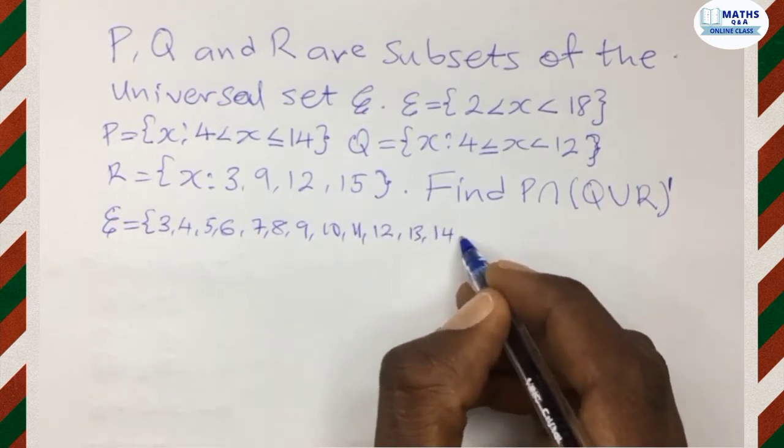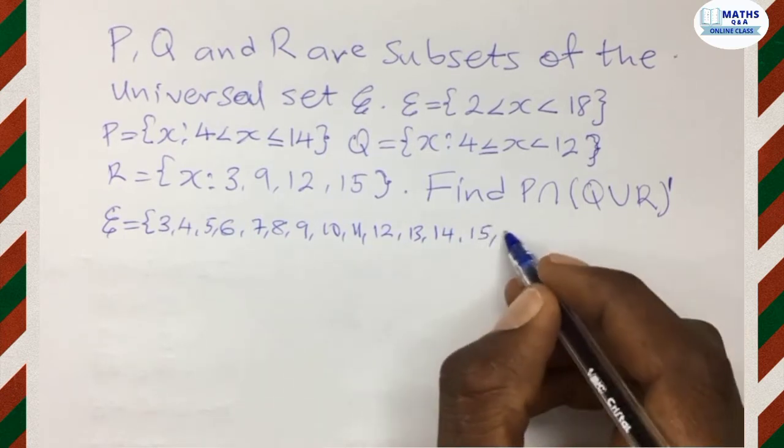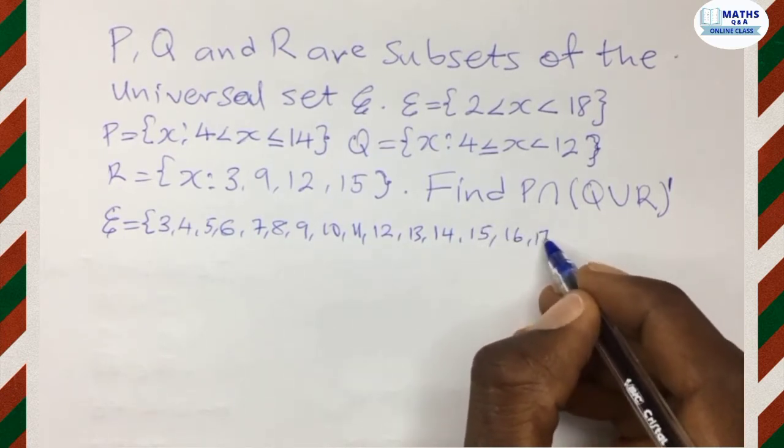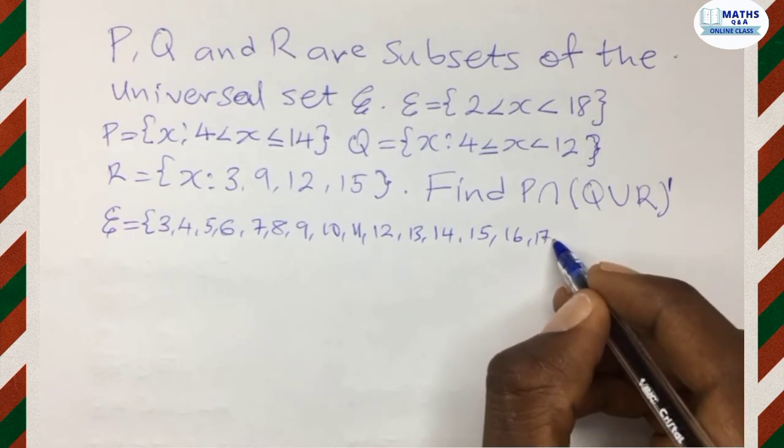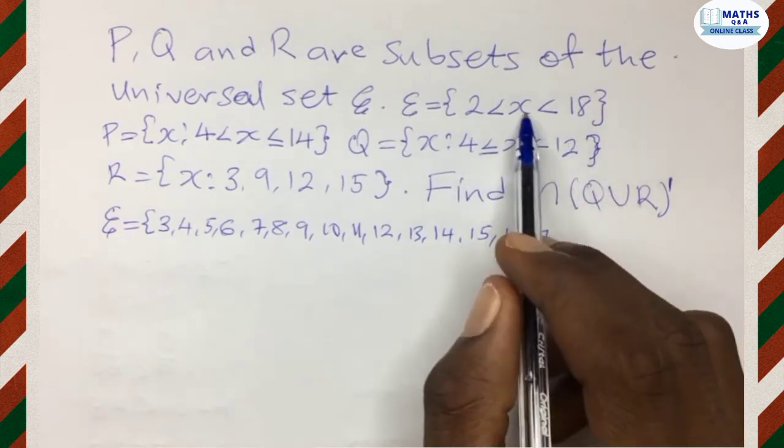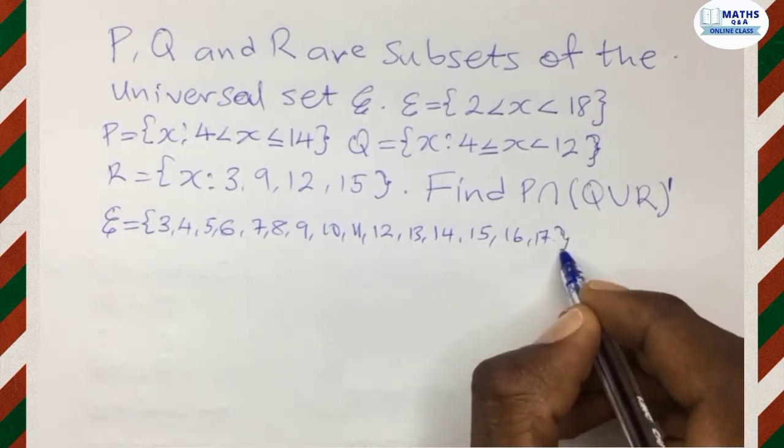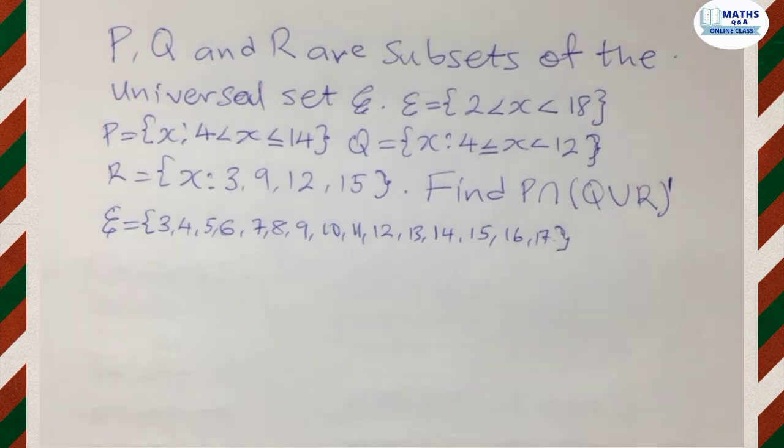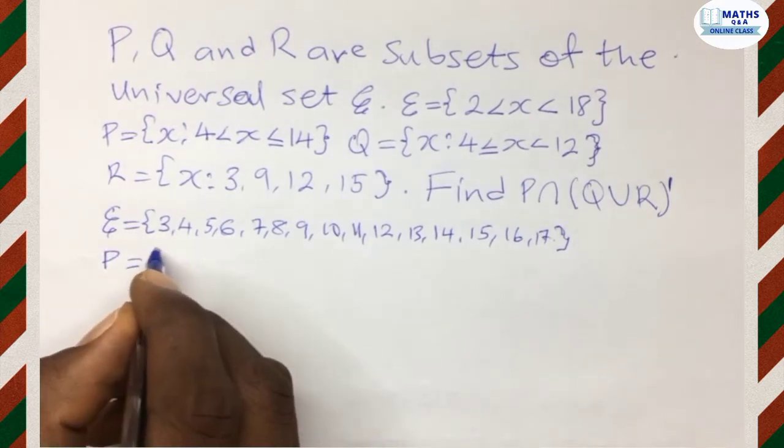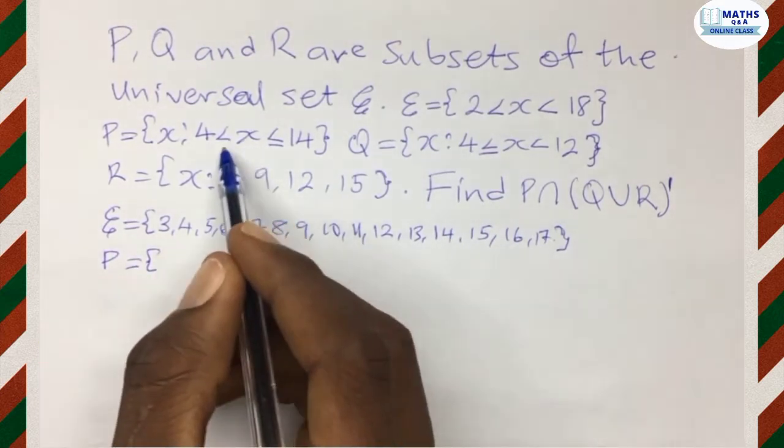13, 15, 16, 17. X is less than 18, so 17, we end there. Good. Then we come to the set P. The set P,